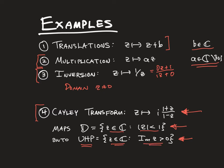And this can be quite useful for transferring any question on the disk to the upper half plane, or vice versa via the Cayley transform's inverse. I also want to point out that later we're going to show that every FLT is a composition of these first three: translations, multiplications, and inversions.